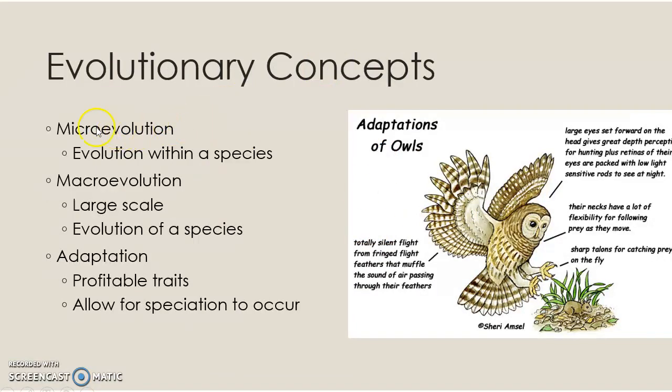Microevolution is evolution within a species. The changes that happen to organisms in a species over generations, but they don't become a new species — that's microevolution. It's happening in us constantly. Sickle cell anemia, blood type, the frequencies of different blood type alleles changing — all of this is microevolution.